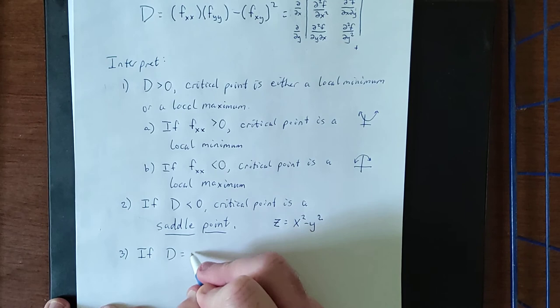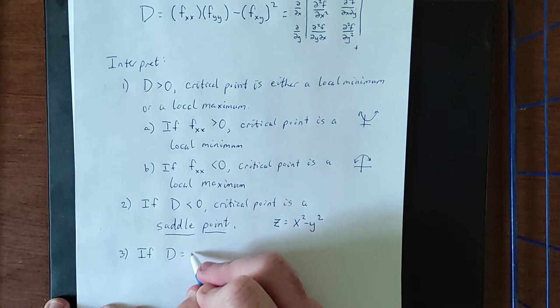Now we also have a very, very trauma-inducing conclusion, that if d is equal to zero, that means that we can draw no conclusion. Thankfully this very rarely, if ever, comes up, so don't worry about that last case too much.